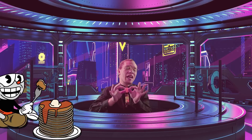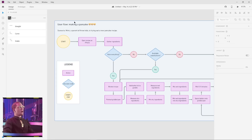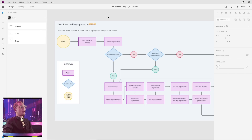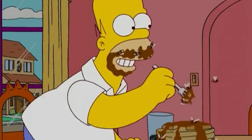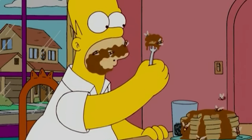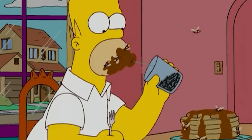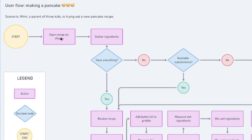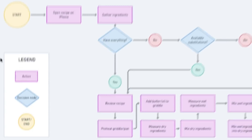Let's take a look at a simple example involving pancakes. User flow: making pancakes. Scenario — Mimi, a parent of three, is trying out a new pancake recipe to cook amazing pancakes for her children. So we're starting off by opening up a recipe on our iPhone, we're gathering ingredients, and then the first question is: do we have everything?